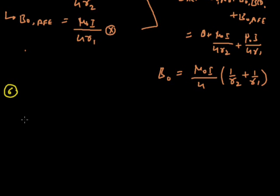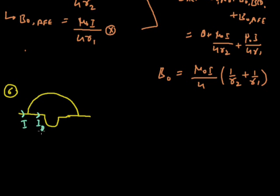Now a similar question is given. Suppose a wire is given and there is a first wire and a second wire. The current I is flowing in the wire as shown in the diagram. This total current I gets divided into two parts at a point: I2 and I1. The outer radius is capital R and inner radius is small r. The center is O. Label the points A, B, C, D, E, and F.